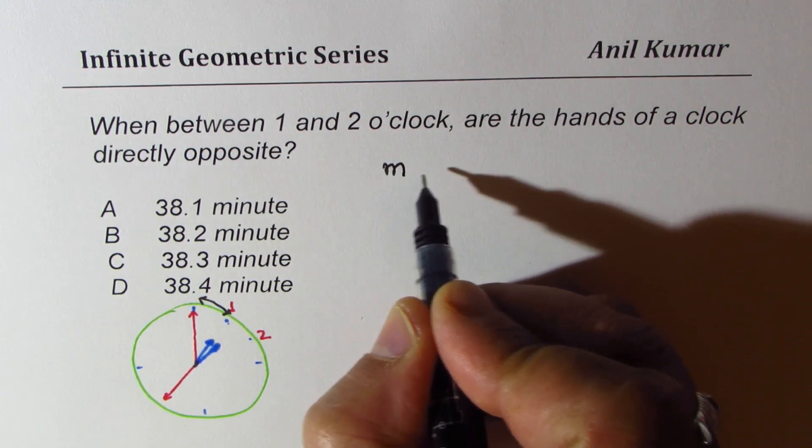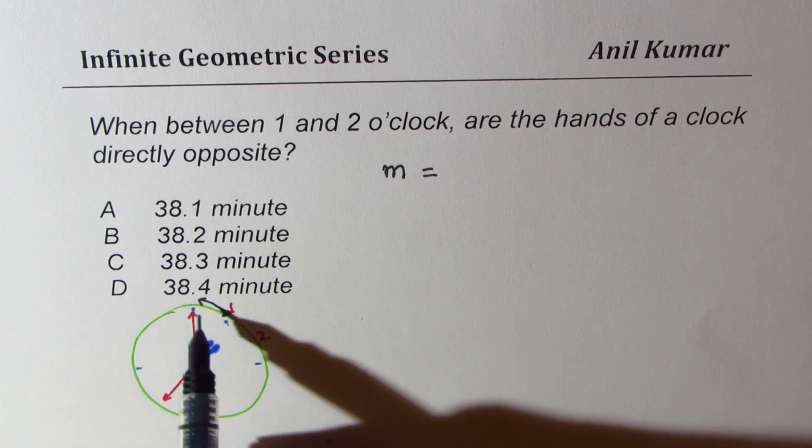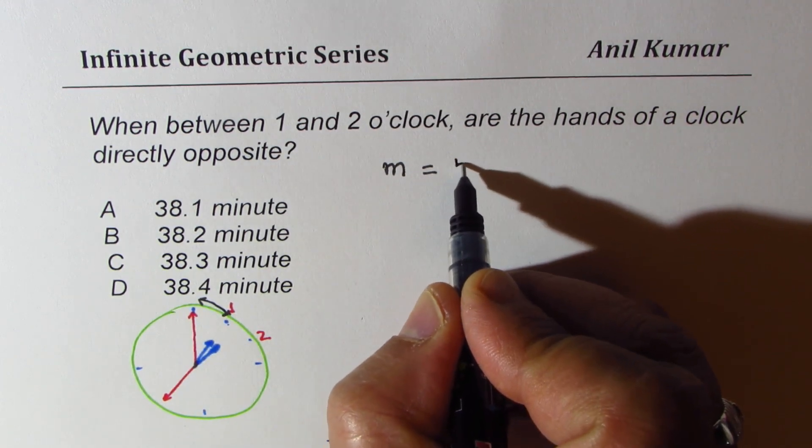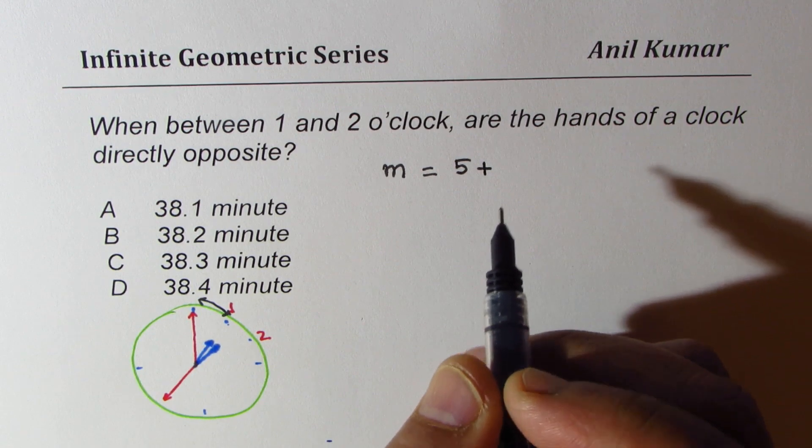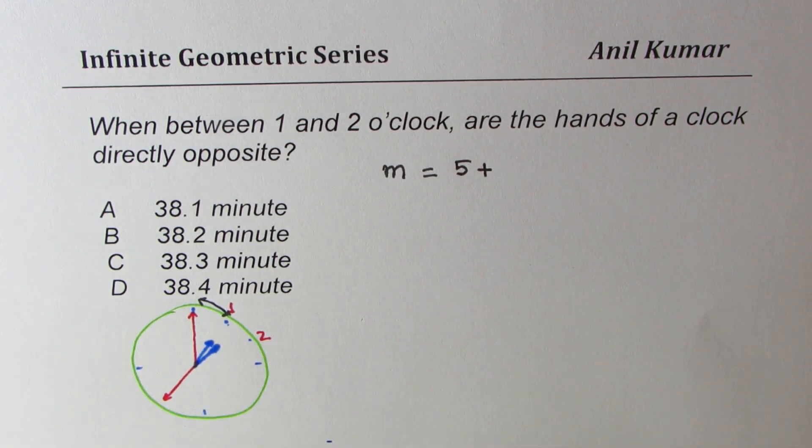So the time taken, let's say m be the time taken in minutes, will be these 5 minutes plus directly opposite will be 30 minutes, directly opposite.